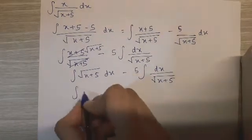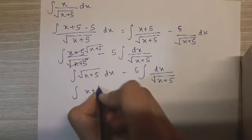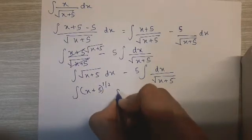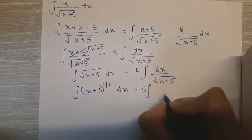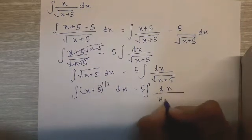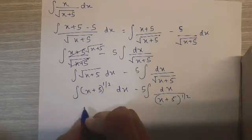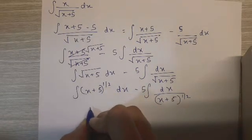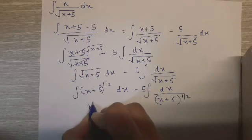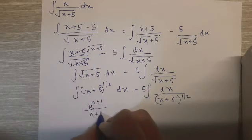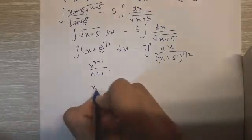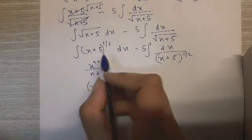So now x plus 5 here can be written as raised to 1/2 minus 5 dx upon x plus 5 raised to 1/2 again. So here we know that when we have the variable, then the integration of that would be x raised to n plus 1 upon n plus 1. So here we have x plus 5, because it's a linear thing, this applies.